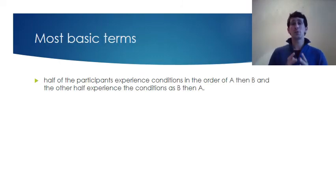So in the most basic terms, if you had to describe what counterbalancing is, it's where half the number of participants experience conditions in the order of A, followed by B, and then the other half participants do condition B, followed by condition A. So again, we're just reversing the order that both groups do the conditions to make sure we can cancel out the effects of order effects.